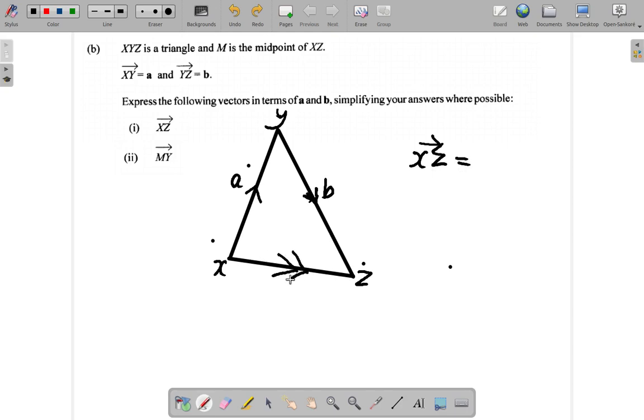Remember, this is the resultant. The vectors you're adding, looking at XY. So first of all, let's write it like this: XY plus YZ.